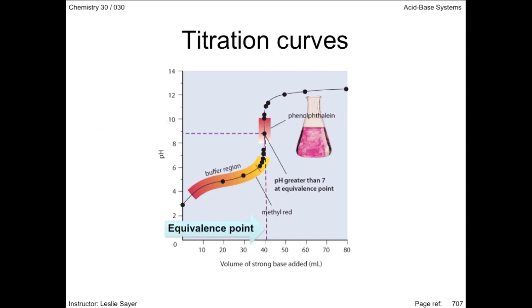The equivalence point is the volume of titrant, that's the solution in the burette, that was added to the flask to reach the endpoint. I make the distinction, but be aware that many textbooks confuse the two.